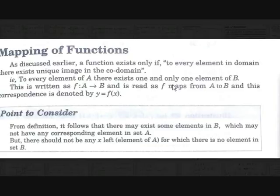Hi guys, Tejas here with another video on math. Today we are going to learn about mappings of functions. First, what is a function? A function exists only if for every element in the domain there exists a unique image in the codomain — meaning for every element in the domain there should be a single image in the codomain.